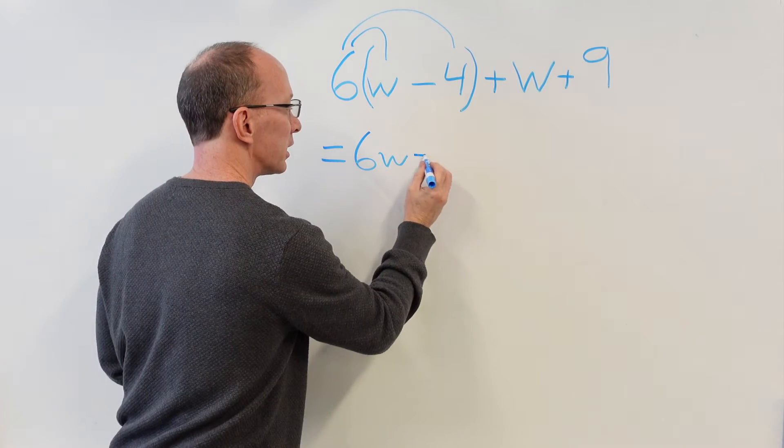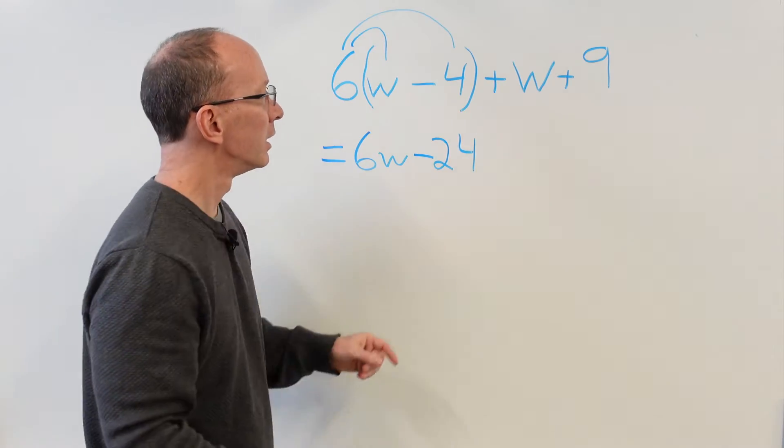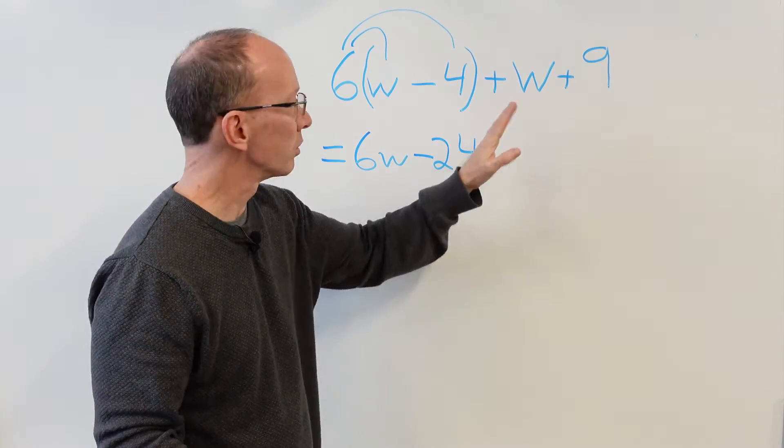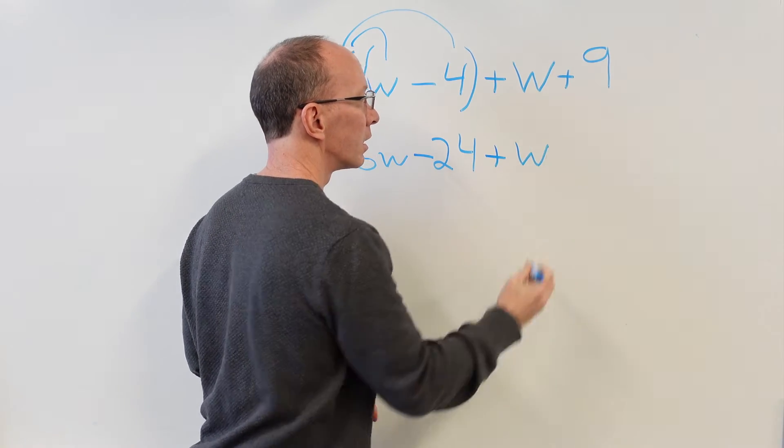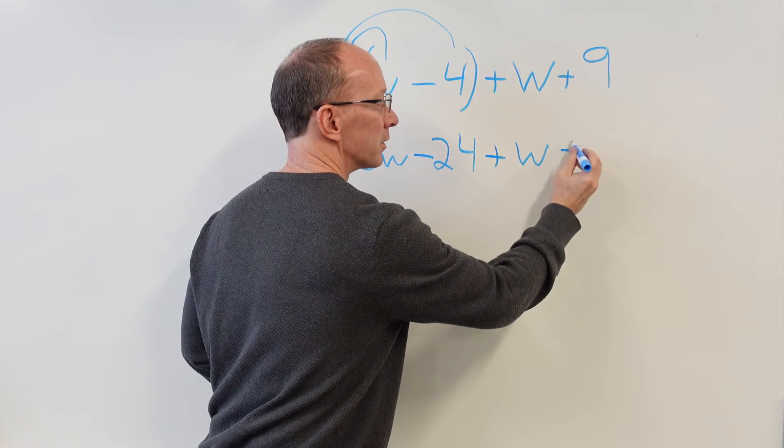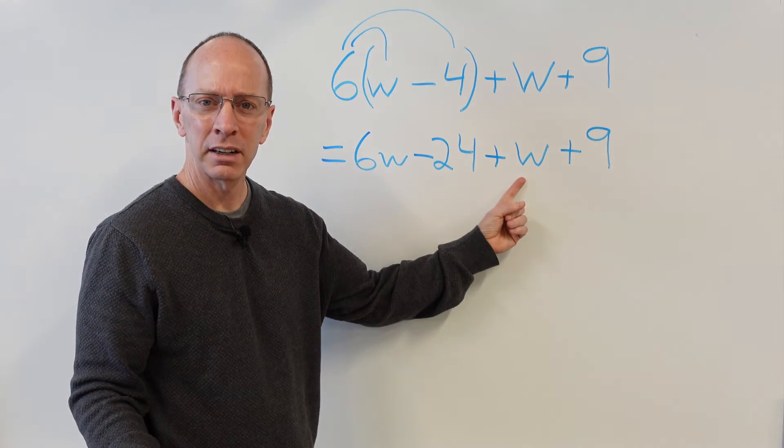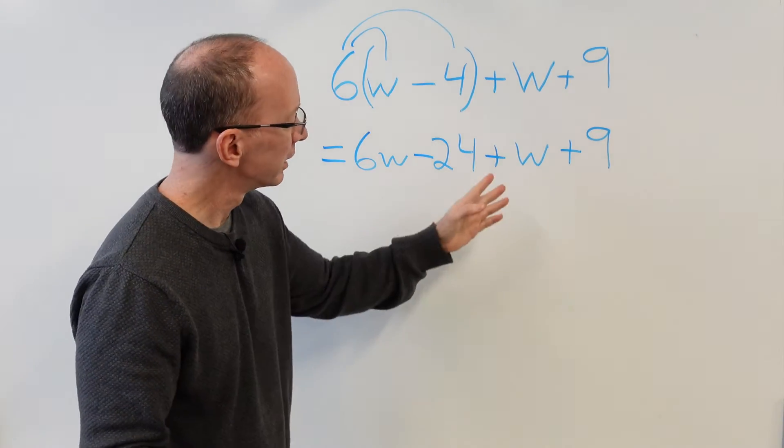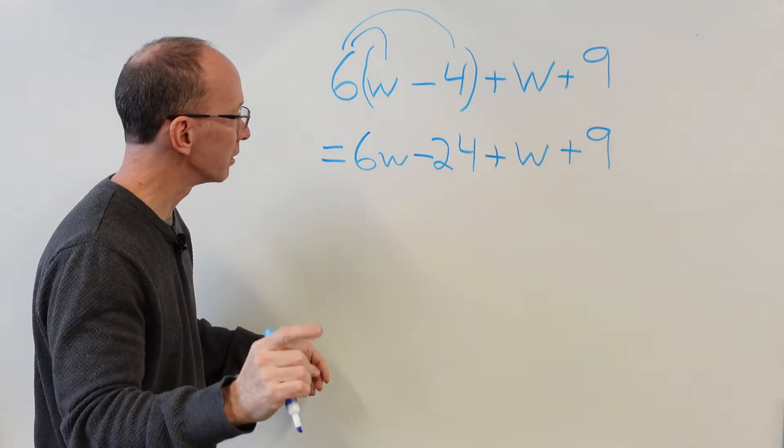Don't forget that subtraction sign. 24 right there. Plus w. Don't have to do anything to it. Just plus w. Plus 9. How many w's do you think there are right there? It's one. They don't put the one there, they just put a w. But it's one w.